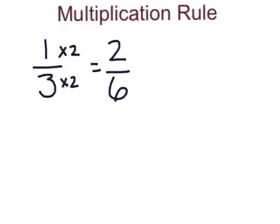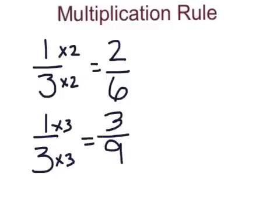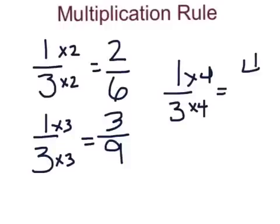Let's list another equivalent fraction by multiplying the top and the bottom by three. Three times one is three, and three times three is nine, making three-ninths another equivalent fraction for both one-third and two-sixths. Let's find one more equivalent fraction for one-third. This time I'm going to multiply the top and the bottom by four. Four times one is four, and three times four is twelve, making four-twelfths an equivalent fraction for one-third.